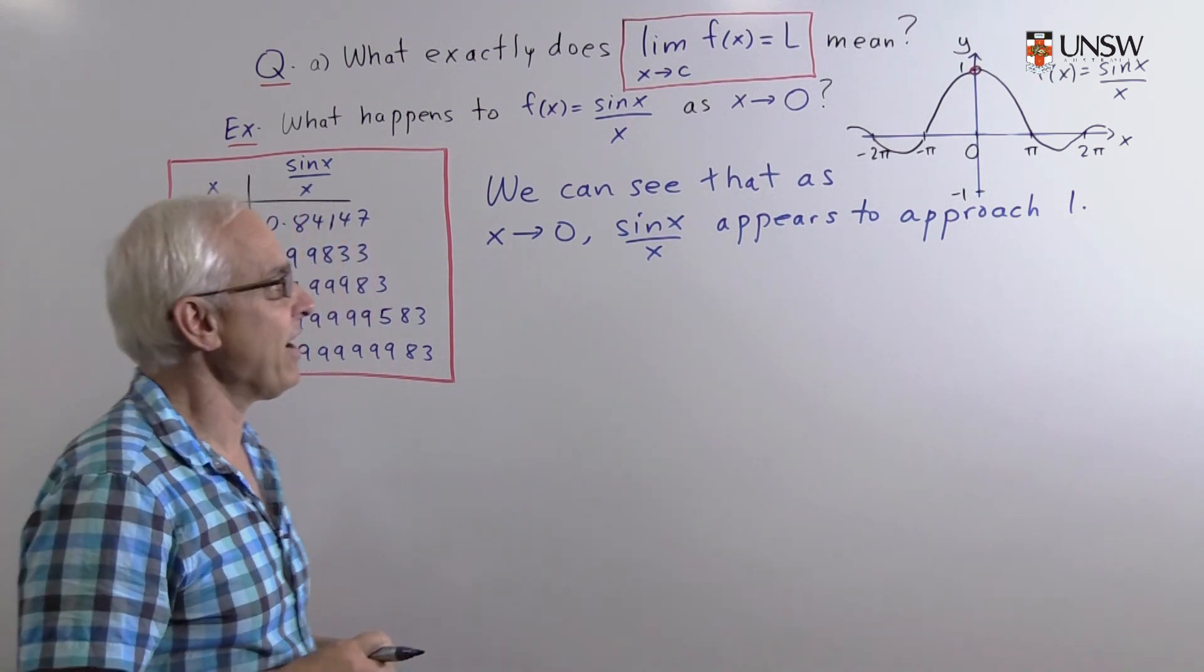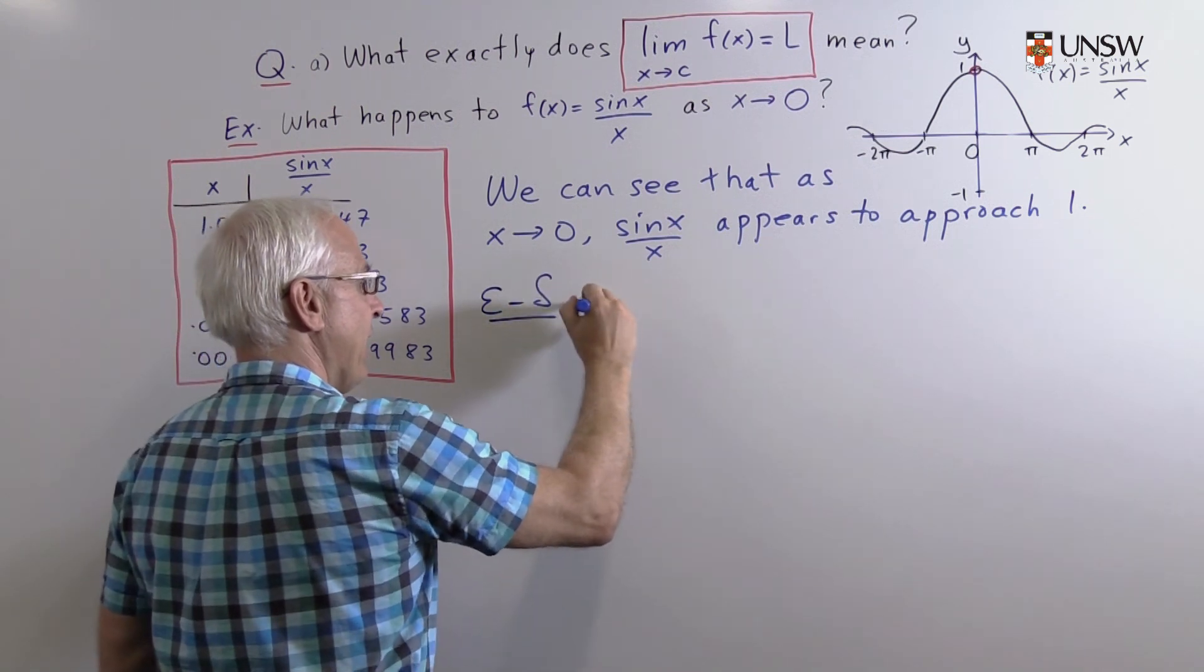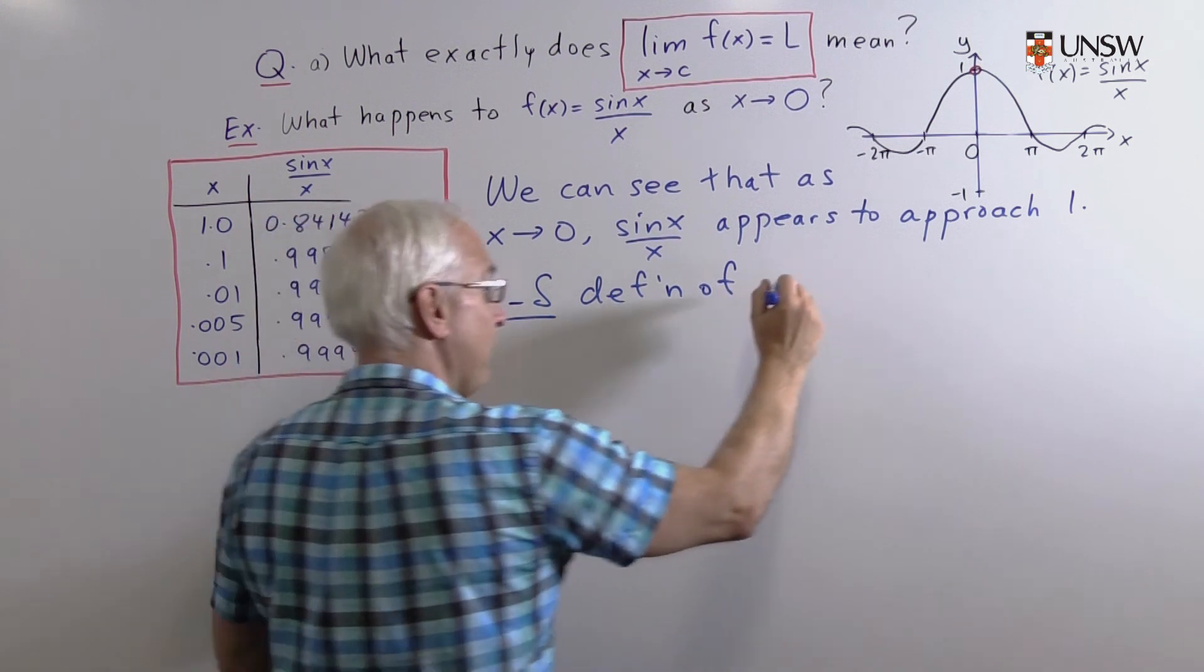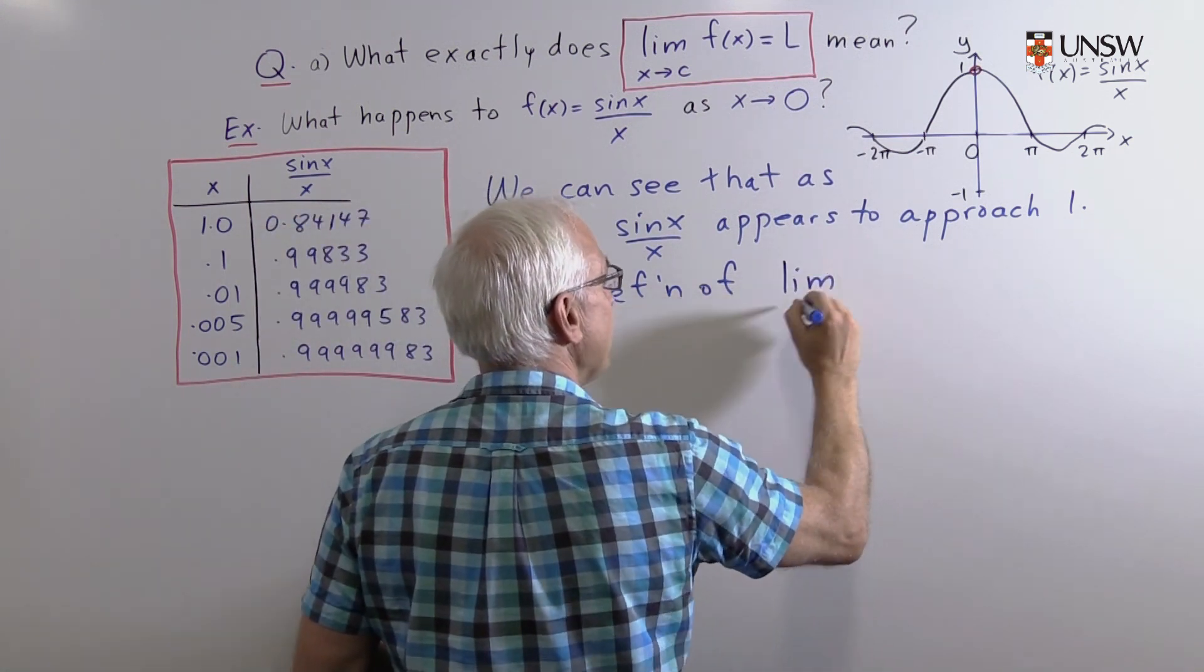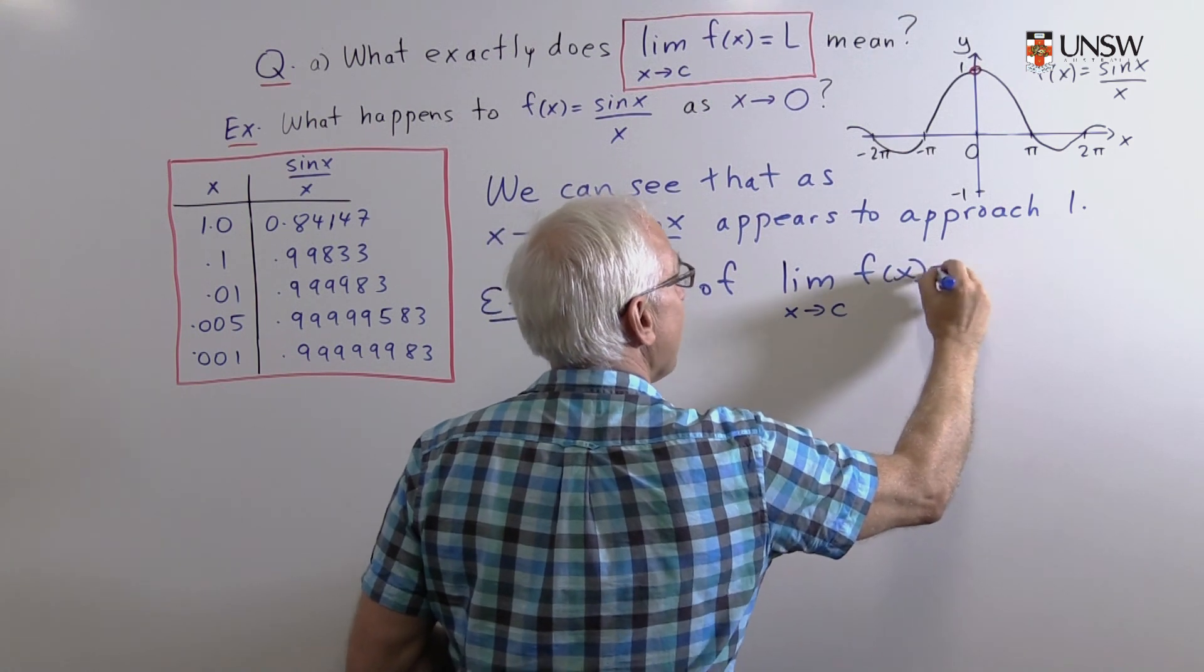So Cauchy and Weierstrass introduced the epsilon-delta definition of the limit of this expression, that the limit as x approaches c of f(x) equals L.